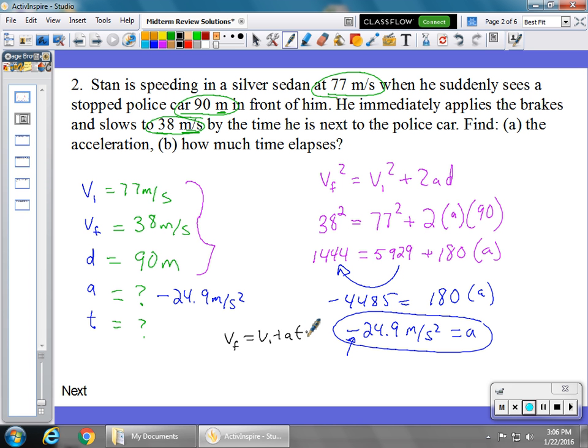Your final velocity is 38. Your initial velocity is 77. Your acceleration is negative 24.9 times the time. So on this side, we're going to bring the 77 over. That gives us negative 39 equals negative 24.9 times the T.